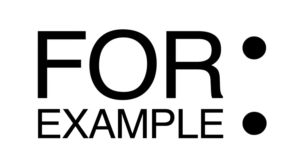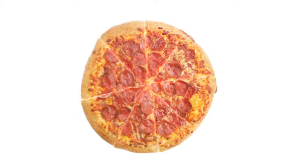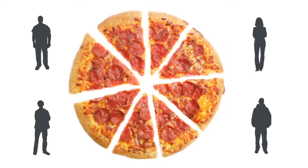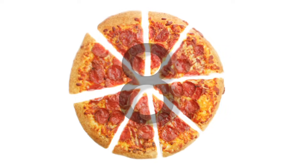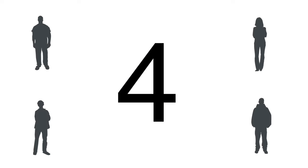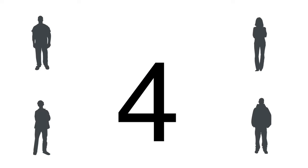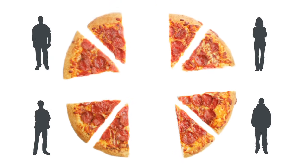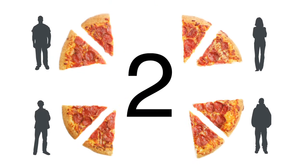For example, if you want to divide a pizza with eight slices between four people, eight is the dividend, four is the divisor, and the number of slices each person gets — two — is the quotient.